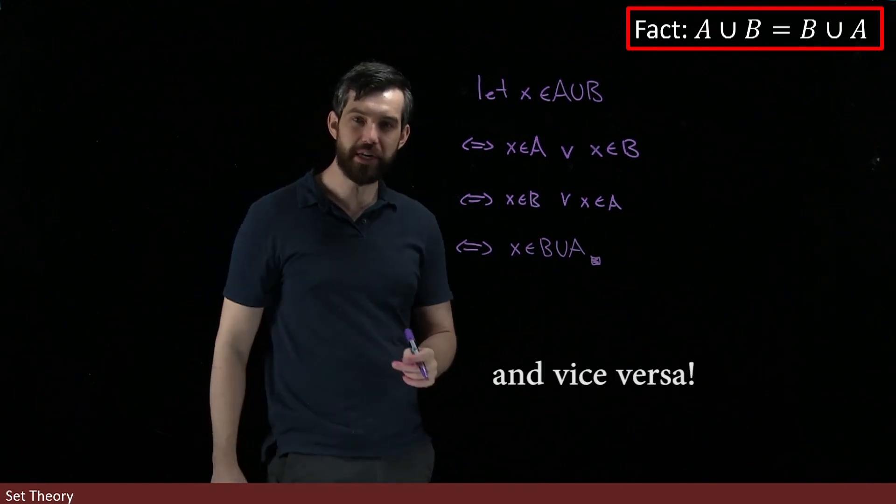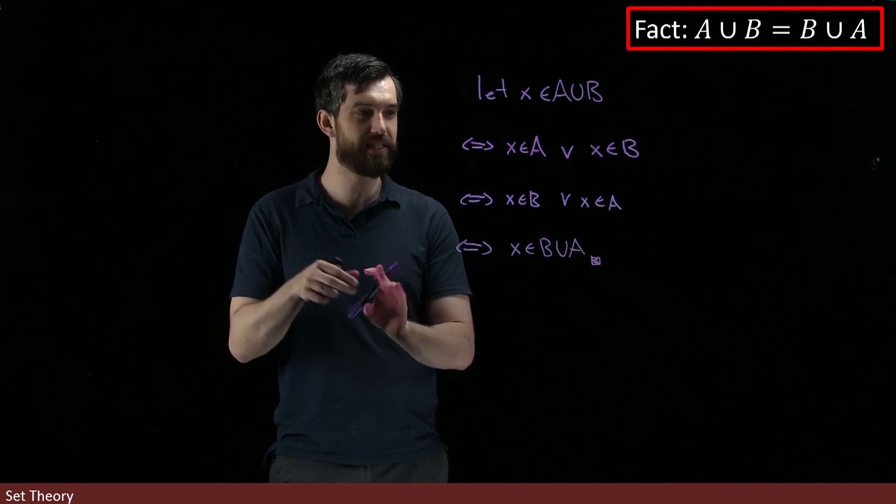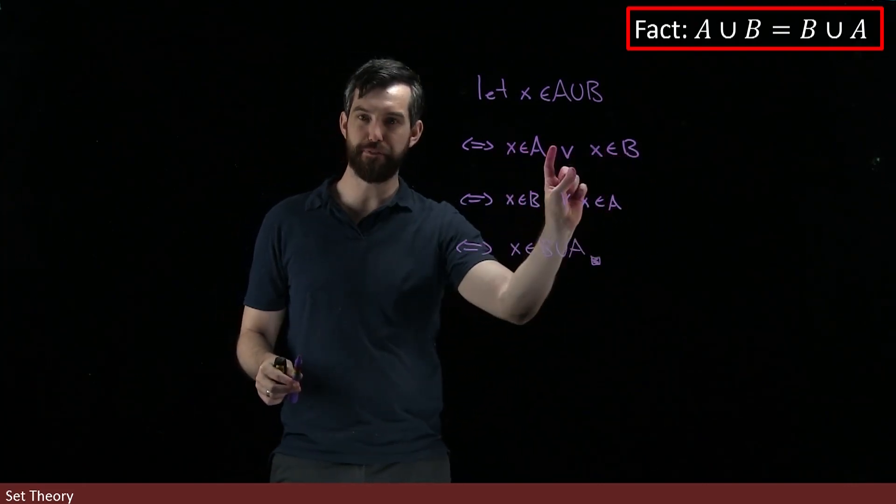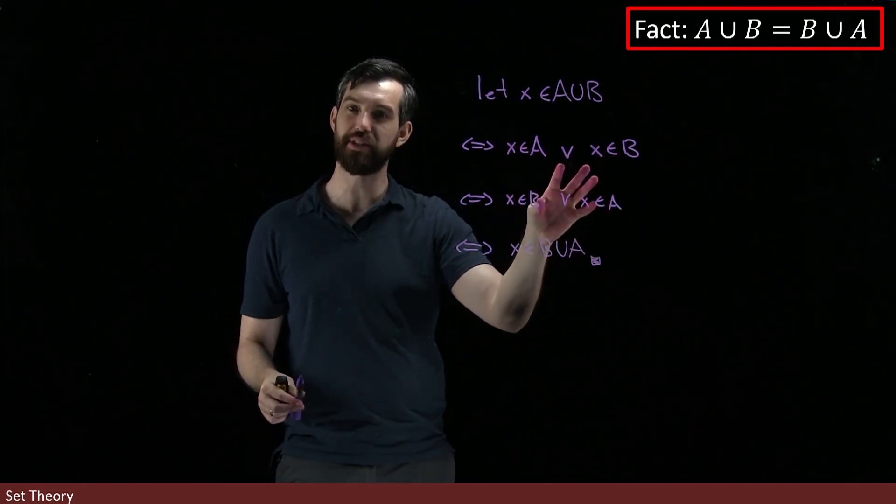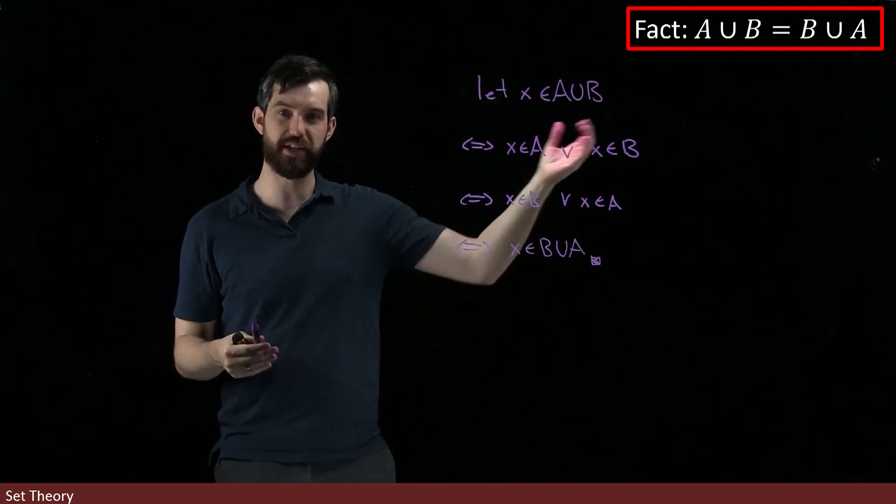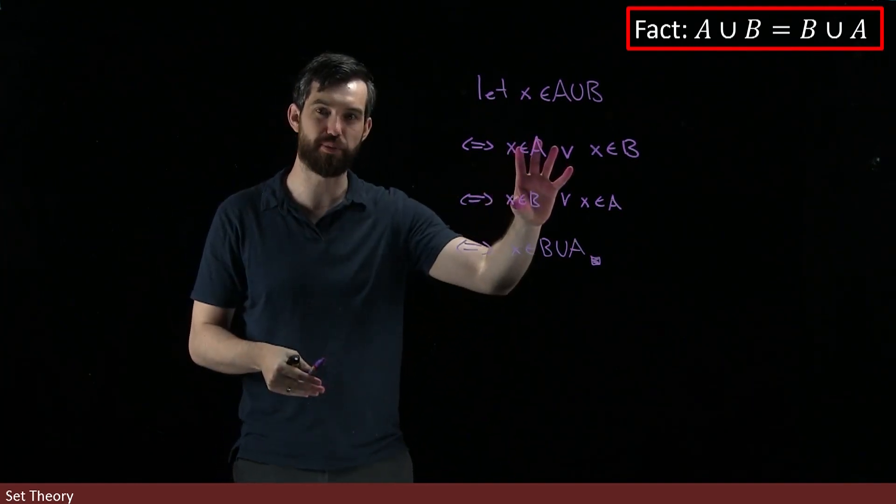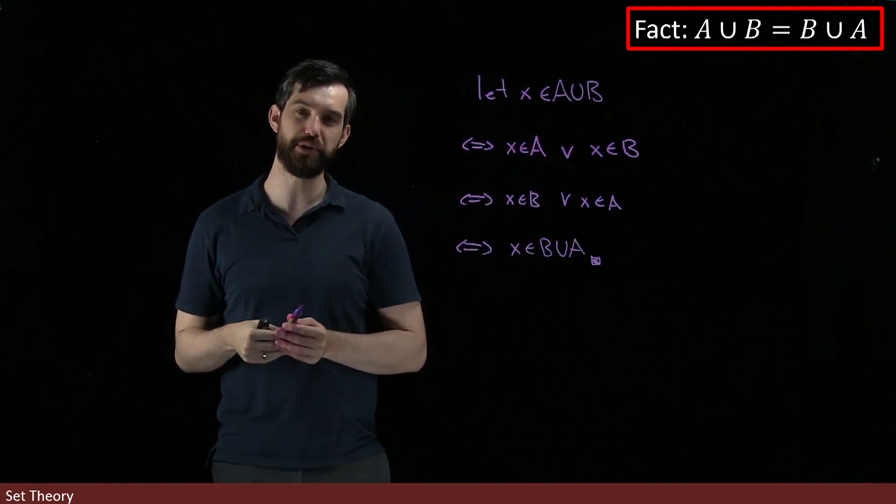And the key thing to note here is that the important property is something about logic. The reversing the order came down here as a logical property. And then because the union was defined in terms of this or statement, you could sort of bring it out of the logical property into the statement about unions.